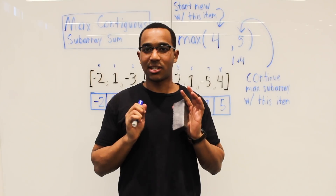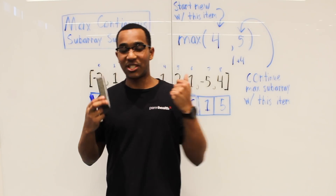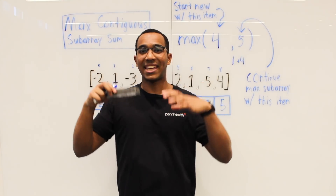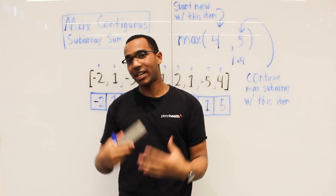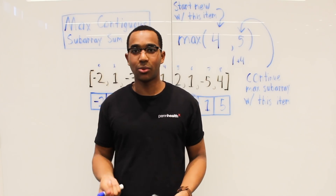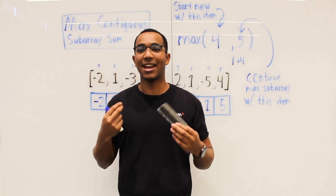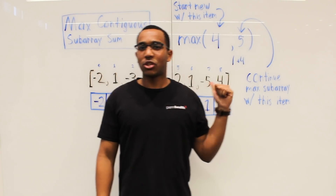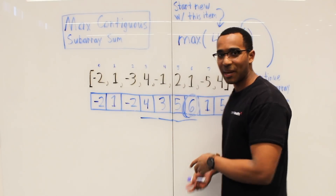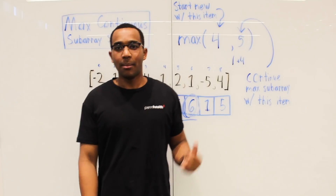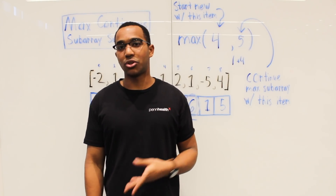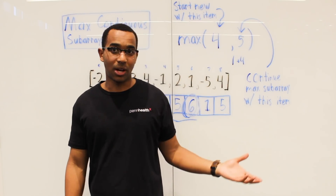This is the essence of this problem and this algorithm — how dynamic programming works. We see the best answer between subproblems, the previous work we've done, and it allows us to deduce the best answer at our current position. The best answer is 6, and the subarray ending at index 6 achieves it. We used linear space here and ran in linear time, but the code in the description shows the constant space solution that also runs in linear time.